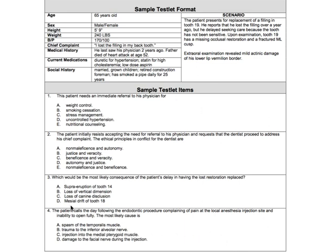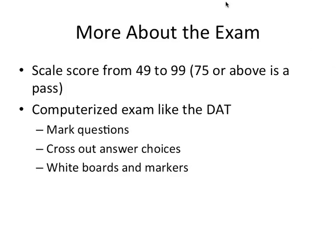These are pretty good examples of what you'd expect for a testlet case group of questions. The exam is judged on a scale score from 49 to 99, and 75 or above is a pass. This does not mean you need to get 75% or more questions right — that depends on how difficult the particular exam is judged to be, and they adjust your score based on that. People have guessed you need to get around 60 to 70% right on average, but there's no guarantee that's accurate.